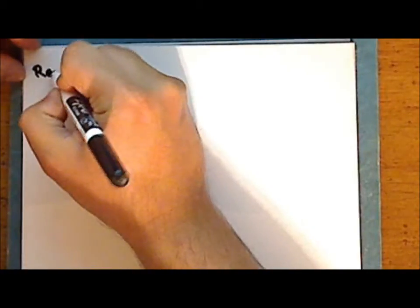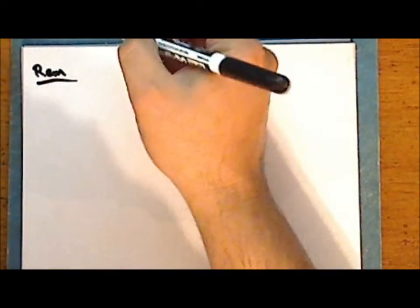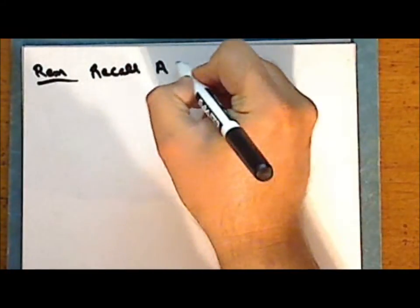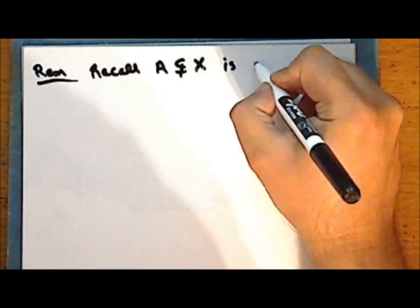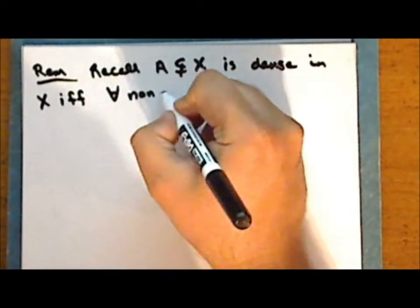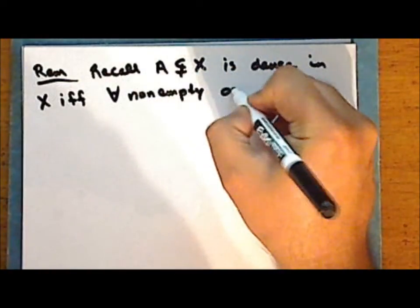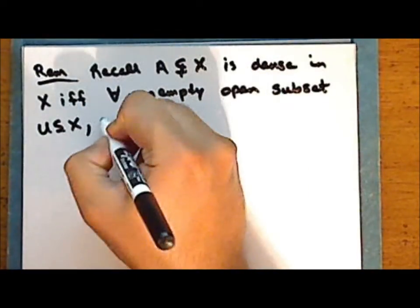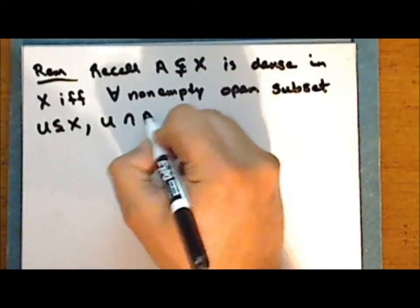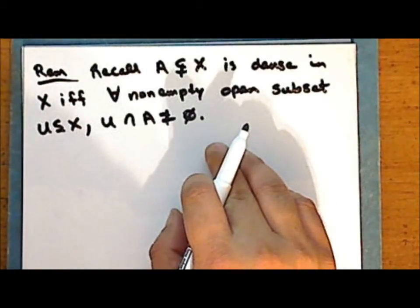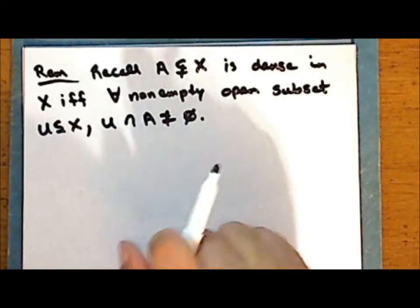We will begin this lecture by looking at one of the exercises set in the previous one. Recall that a proper subset A of a given space X is dense in that space if and only if for every non-empty open subset U of X, the intersection of that open set with the set A is not empty — that is, every non-empty open set has at least one point in common with A.